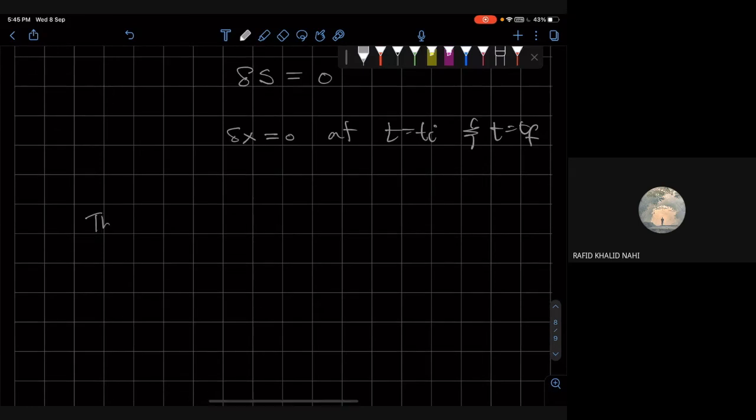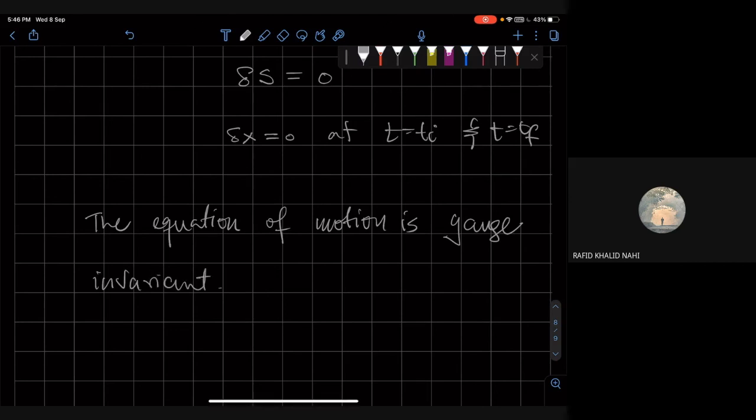So the equation of motion does not change under a gauge transformation. So the equation of motion is gauge invariant, even though the Lagrangian isn't. That could make an excellent problem for either an exam or an assignment.